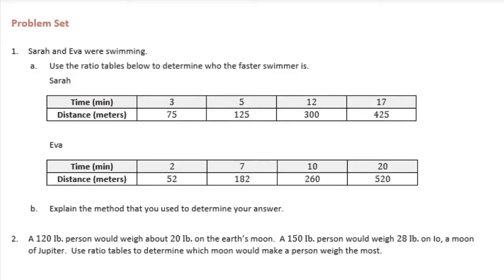I'm going to start with the smallest one, 3 to 75, and reduce that to find the value. I can divide both of those by 3. So 3 divided by 3 is 1, and 75 divided by 3 is 25. So I'm just going to add onto the chart — for every one minute, she swims 25 meters.